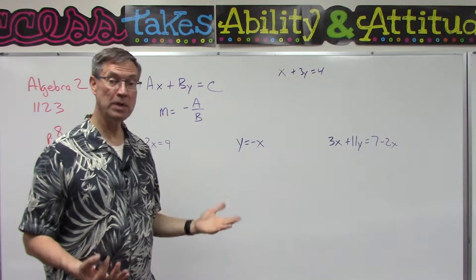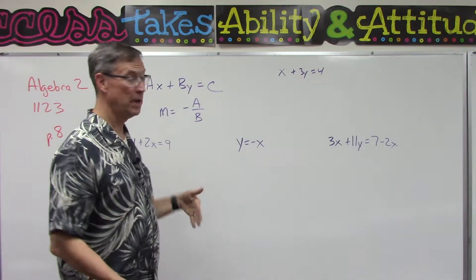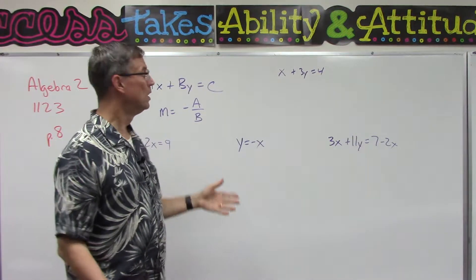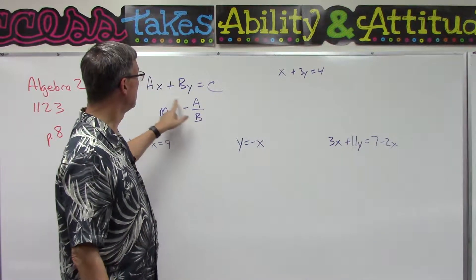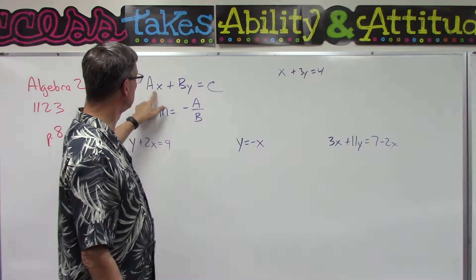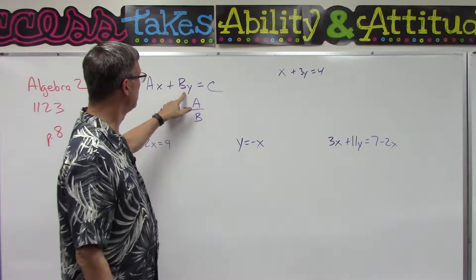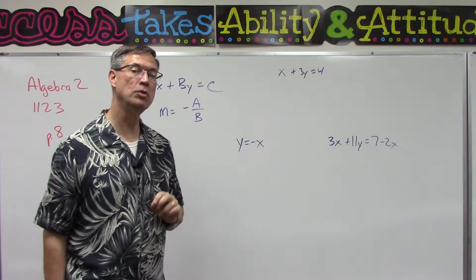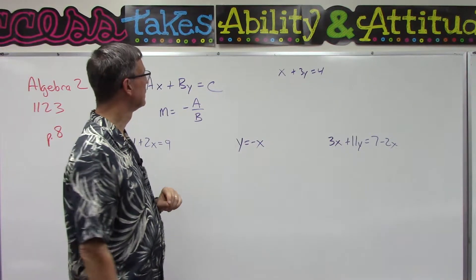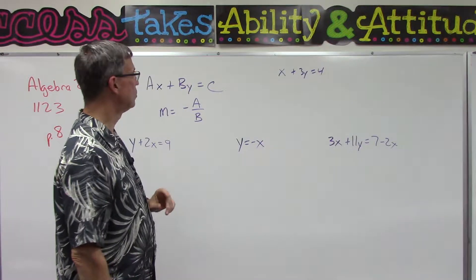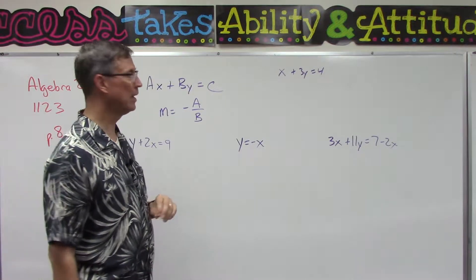We can very easily find the slope. Remember, for some reason m represents slope. So the slope is going to be the coefficient on x, whatever this number is, divided by whatever the coefficient is on y, and then we change the sign to negative.